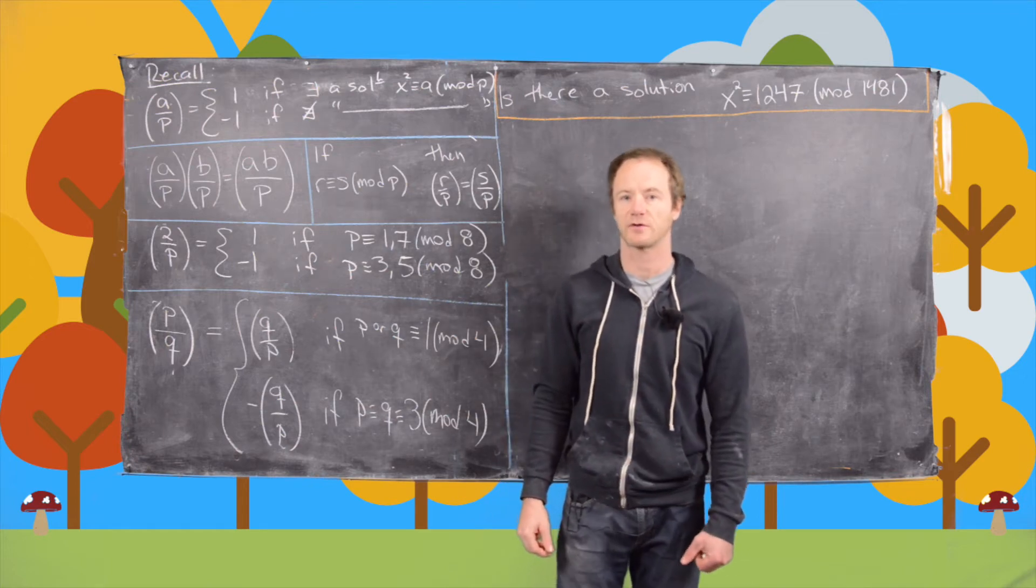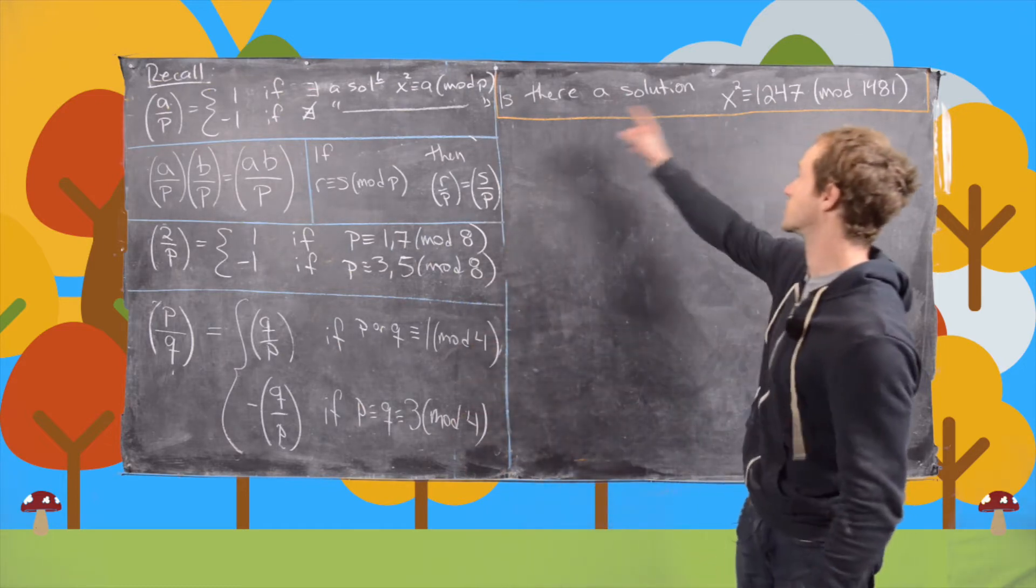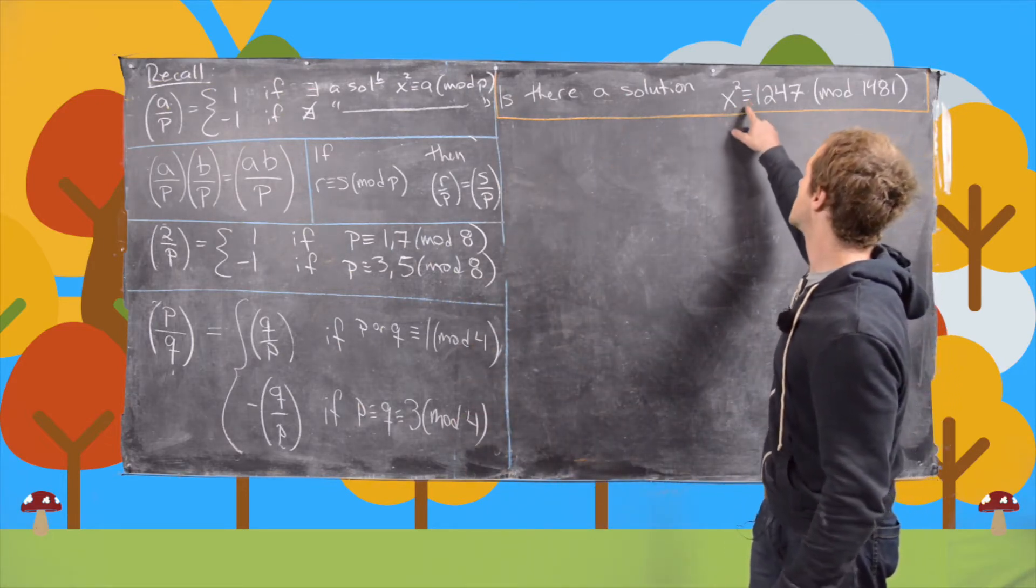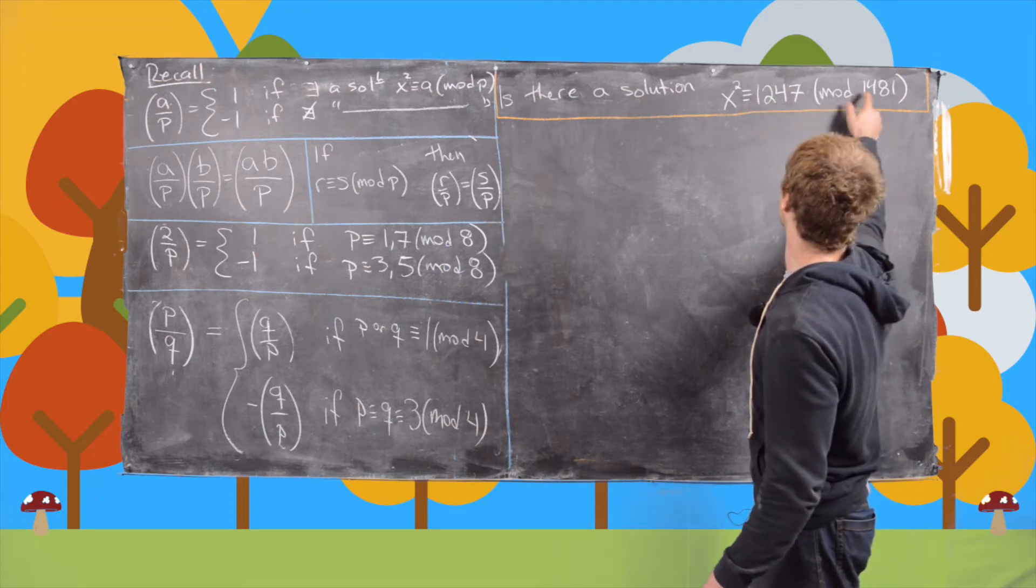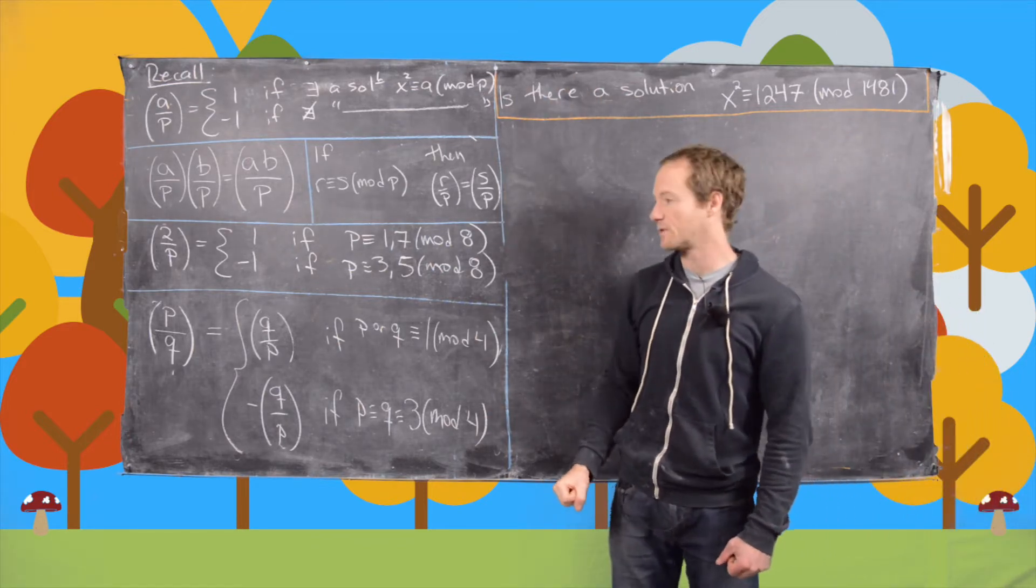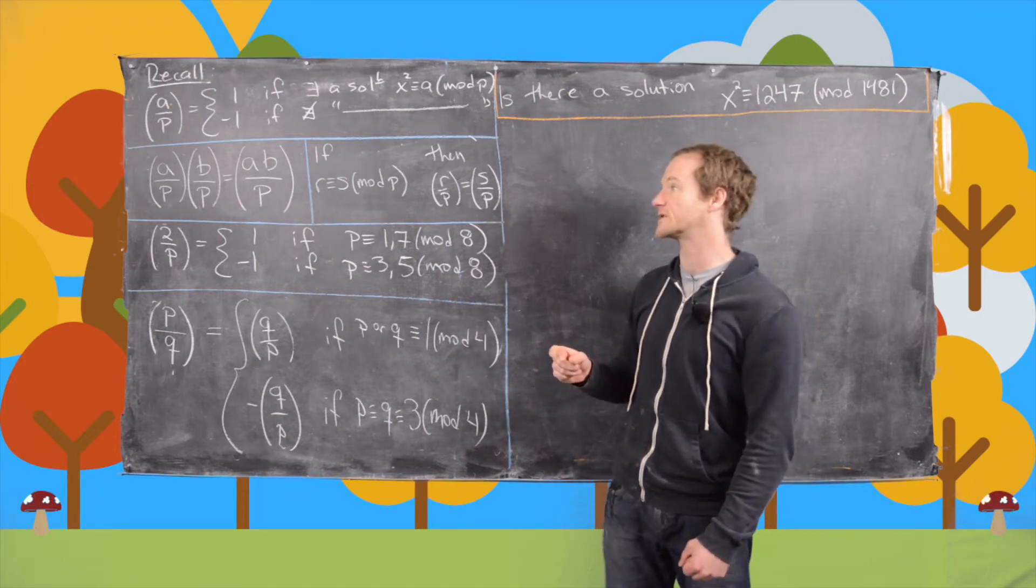In this video we're going to use the power of quadratic reciprocity and the properties of the Legendre symbol to answer this question. So is there a solution to this congruence? x squared is congruent to 1,247 mod 1,481. So let's just recall some properties of the Legendre symbol and how it's defined, including quadratic reciprocity before we get started.